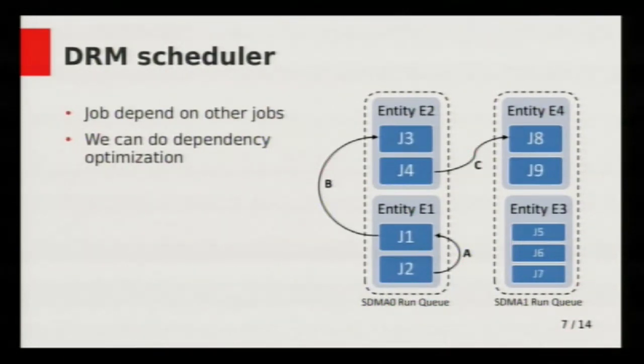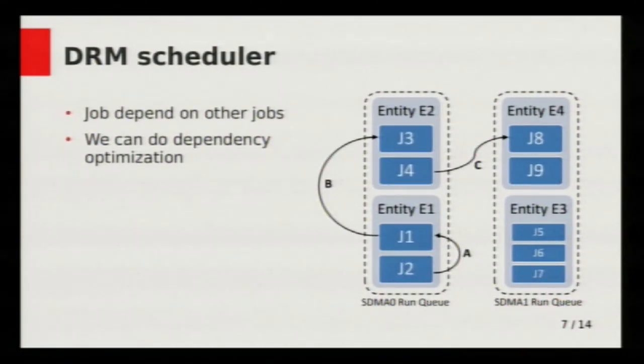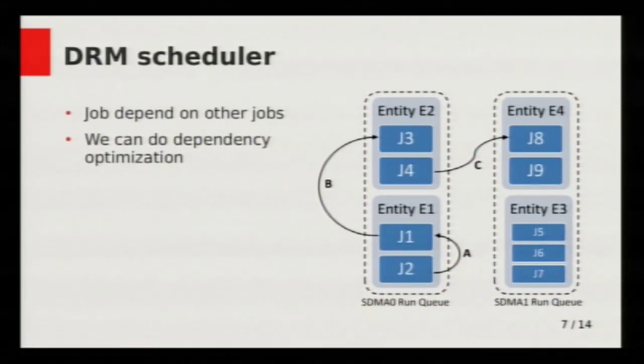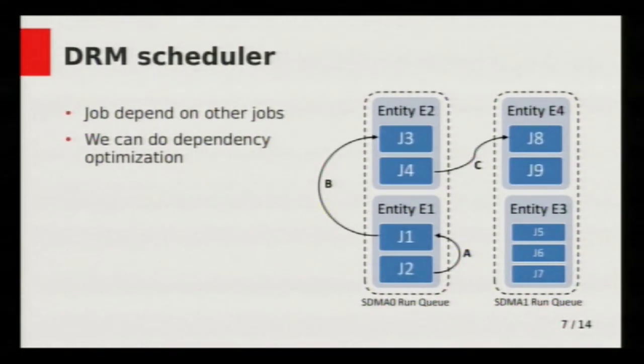There are different kinds of dependencies. Type A dependency means J2 depends on J1, which is the trivial one and is a property of the entity itself. Type B dependency is where J1 depends on J3, a job in another entity but in the same queue. There is a third type C, where a job depends on another job on a different queue on a different hardware engine entirely. One special property of the hardware queue is that it executes jobs in the order they were pushed.